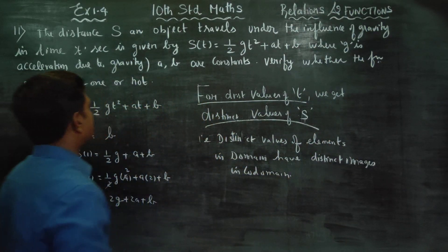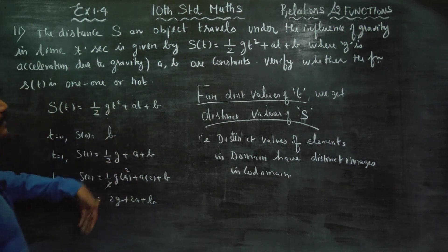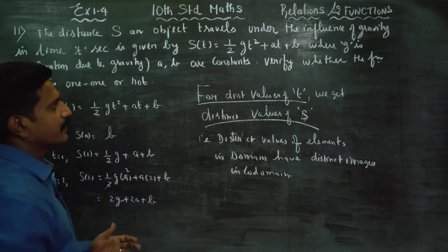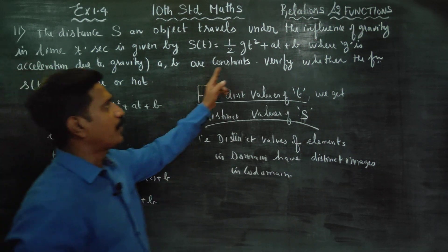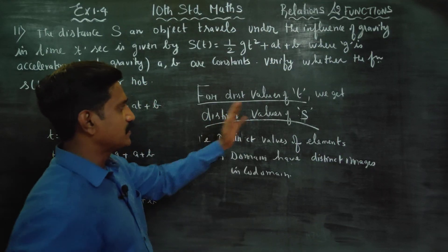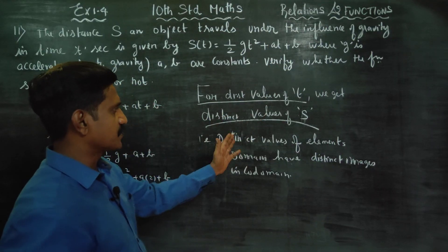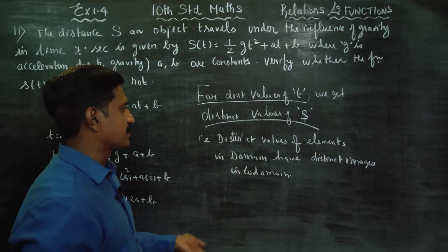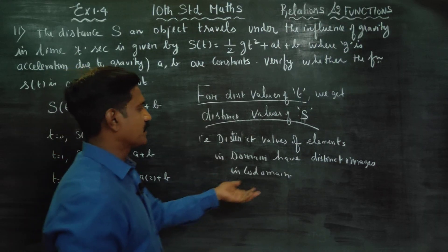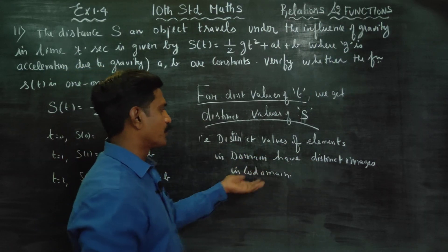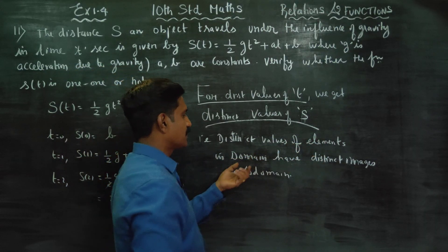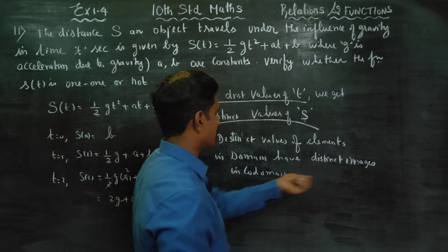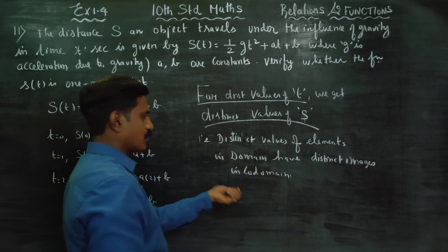Here, t is our domain and s is our co-domain. In the formula, for distinct values of t, we get distinct values of s. Therefore, distinct elements in the domain have distinct images in the co-domain.